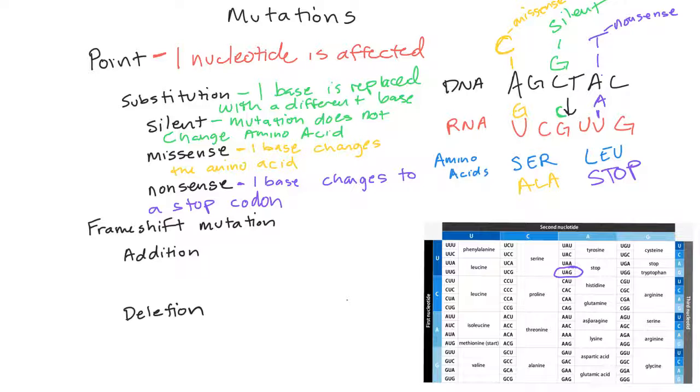Missense mutation will only change one amino acid, so it's generally not going to be a big deal. However, it can have dramatic consequences. So for example, sickle cell anemia is just one point mutation, which changes an amino acid, which changes the whole shape of the hemoglobin. But generally it's not going to have that dramatic effect, but it can.